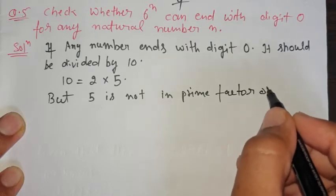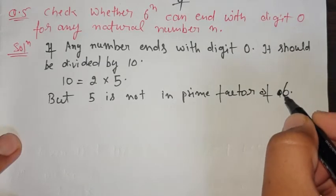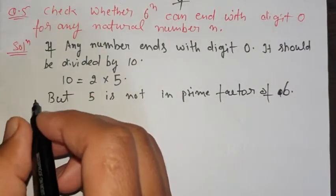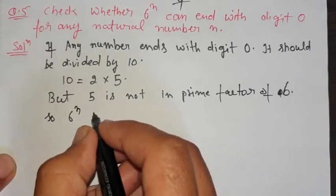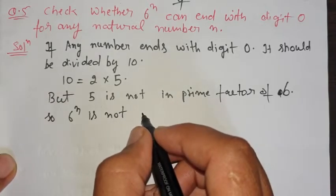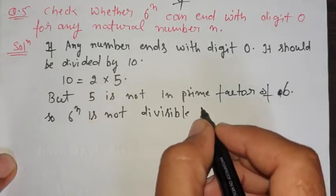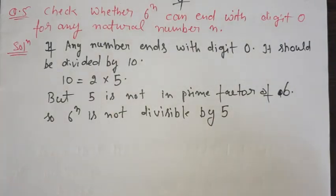5 is not a prime factor of 6. So it is clear that 6 raised to the power n is not divisible by 5. If it is not divisible by 5, then it is not divisible by 10 either.